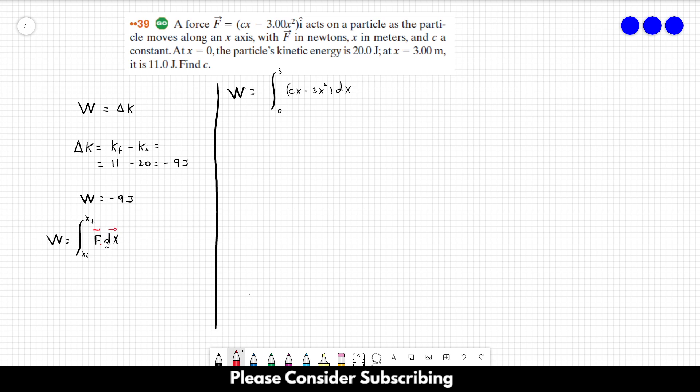Since it is in the i direction, which is the same as the x direction, we can just use the magnitude of the values without the vector itself. So solving this integral, we have Cx squared over 2 from 0 to 3 minus 3x to the third over 3 from 0 to 3.